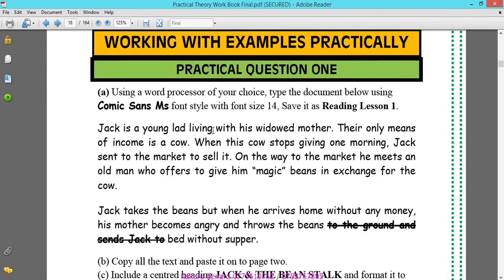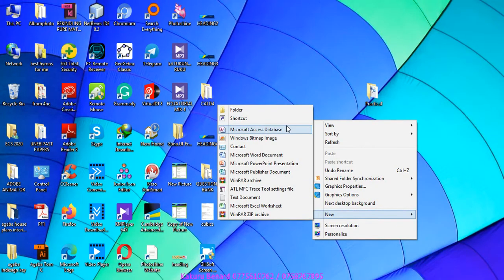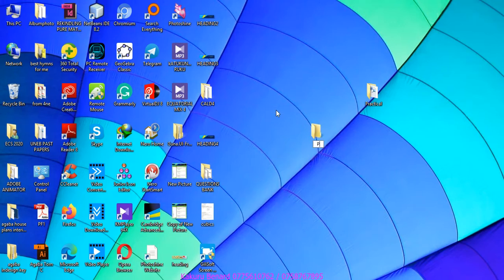To begin with is practical question one. It says, using a word processor of your choice, type the document below using Comic Sans font style with font size 14. Save it as reading lesson 1. Please remember to subscribe to my YouTube channel for more lessons. We shall have to create a folder on the desktop called practical lesson 1.